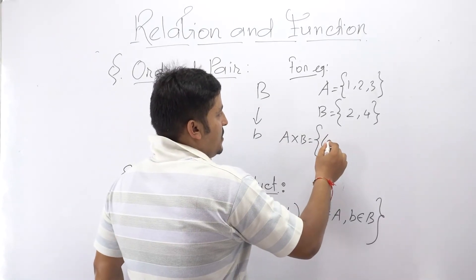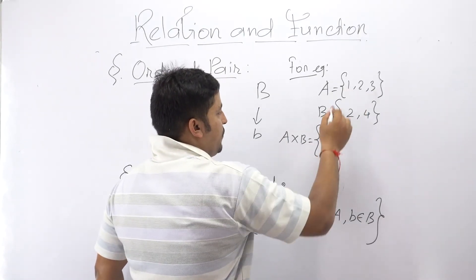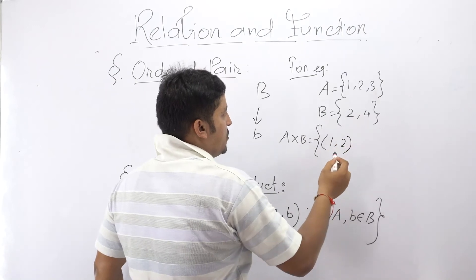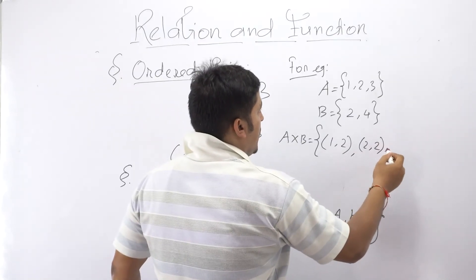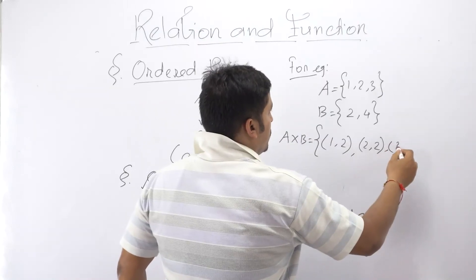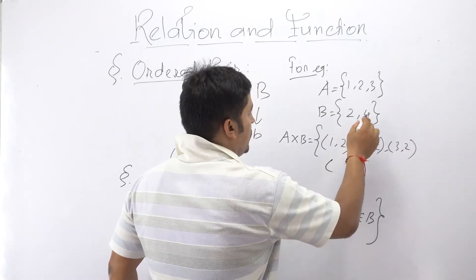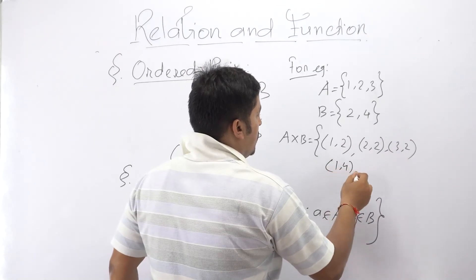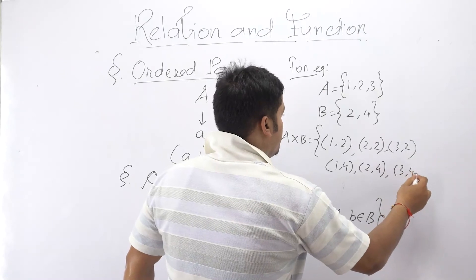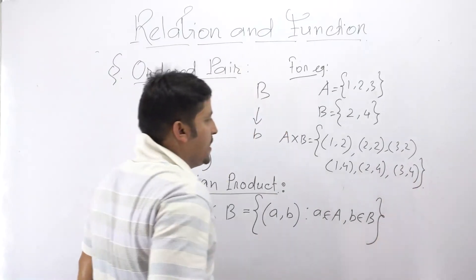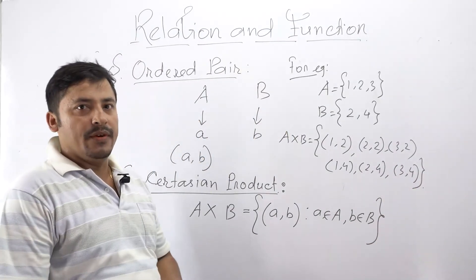First ordered pair is what? First consider the element of the first set one then second element is two, this two, then two two, then three two. Again with this element four, one four, two four, and three four. So this is the Cartesian product of A and B.